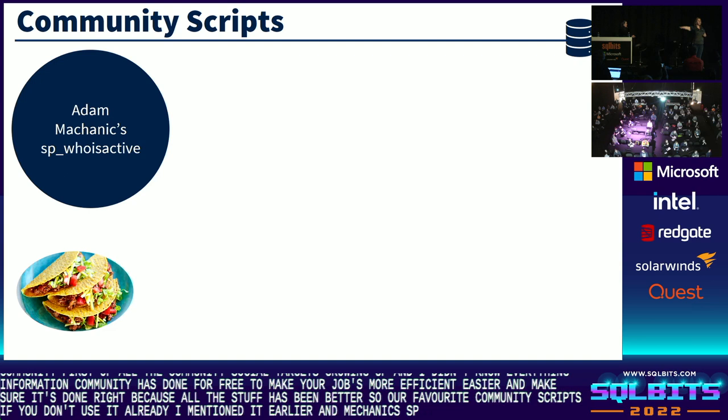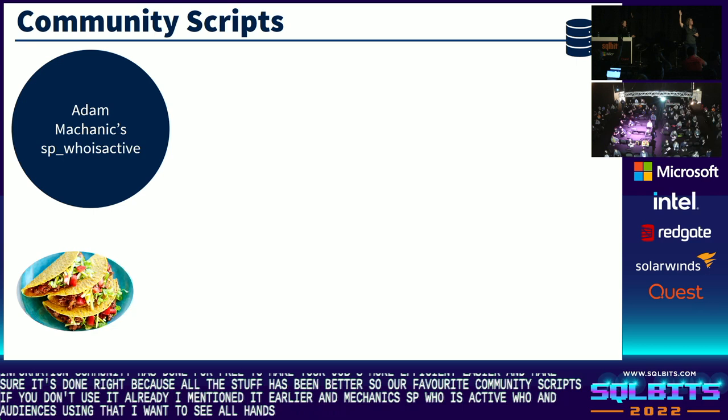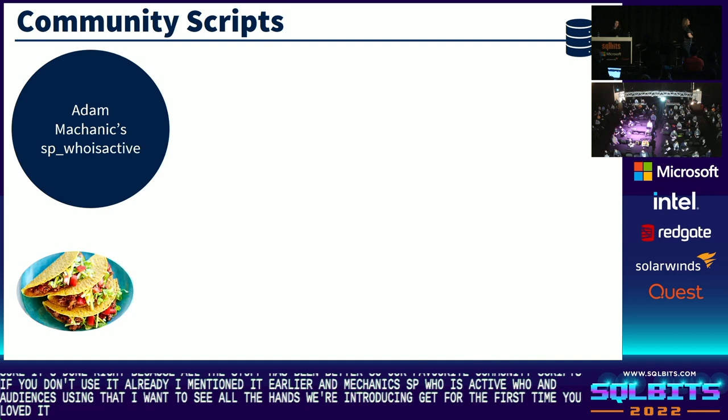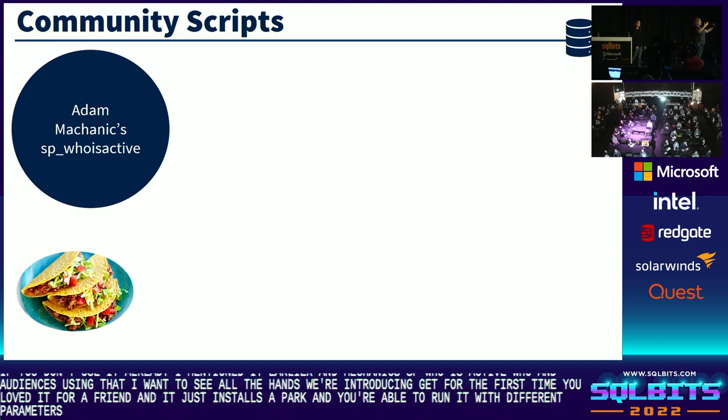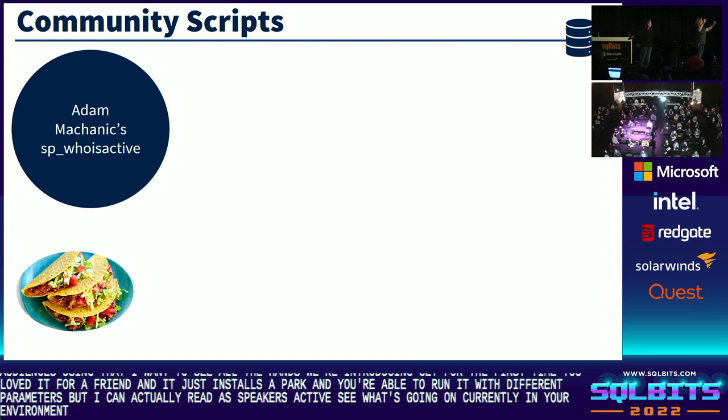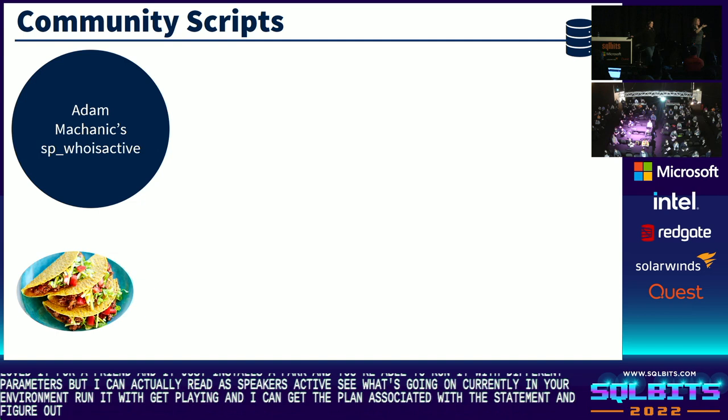Who in the audience is using SP_WhoIsActive? That was most of everybody. If you don't know what it is, we're introducing it for the first time — don't be embarrassed. It's on GitHub, you can download it for free. It installs a proc, and you can run it with different parameters. I can run SP_WhoIsActive to see what's going on currently in your environment, run it with the get_plans parameter to get the plan associated with the statement, and find lead blockers using the find_lead_blockers parameter.